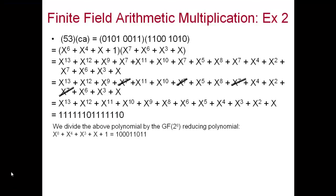Another GF multiplication example: F3 × CA in hexadecimal. F3 in binary is 0101 0011 and CA is 1100 1010. Writing as polynomials: F3 gives x^6 + x^4 + x + 1 and CA gives x^7 + x^6 + x^5 + x^4 + x^3 + x.